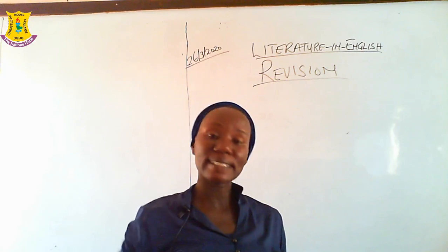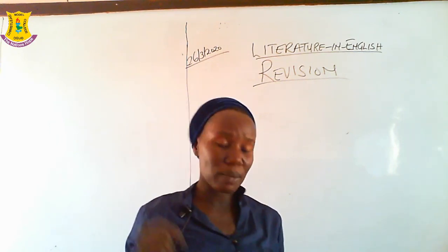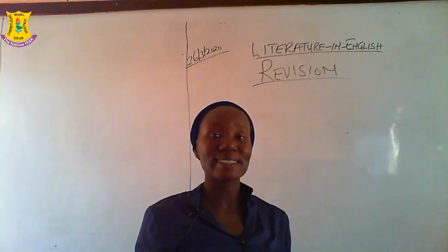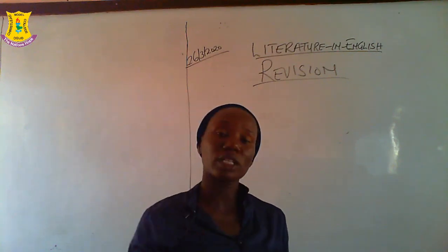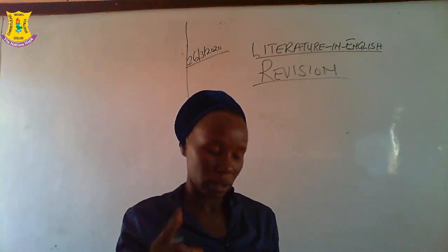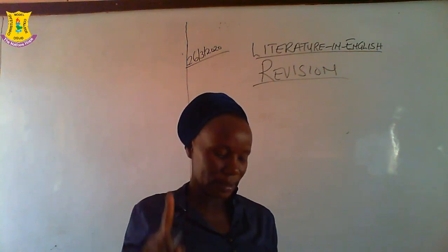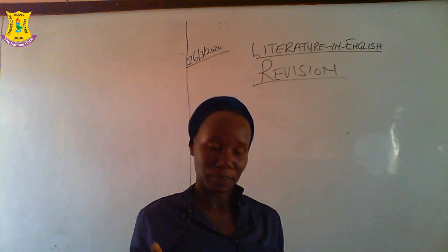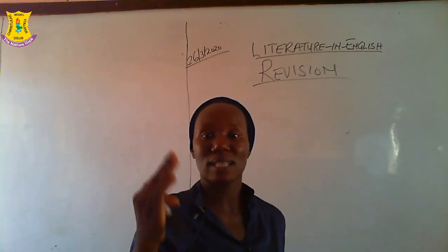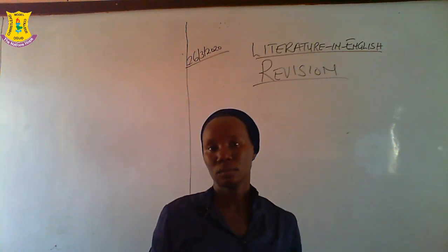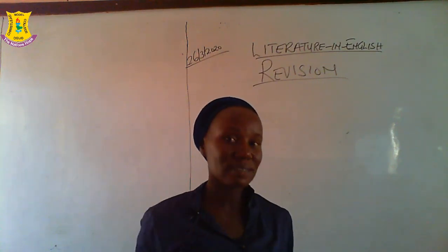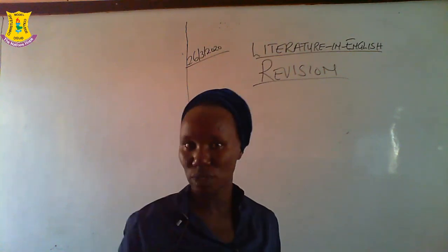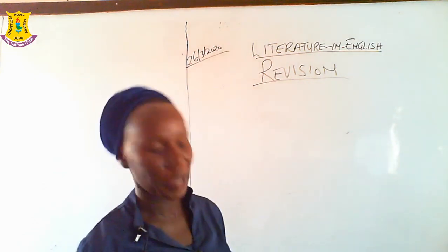Session C is African Poetry. We have 2 questions there. Likewise, in Non-African Poetry, we have 2 questions. The instruction under African Poetry says answer 1 question only from this session — out of 2, pick one. Under Non-African Poetry, out of 2, pick one. So, how many questions are to be answered altogether on Paper 3? That means we are to answer 4 questions under Paper 3, which is Drama and Poetry. 4 questions in all.